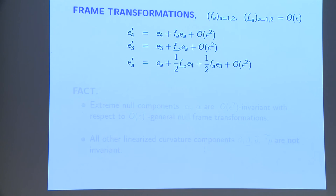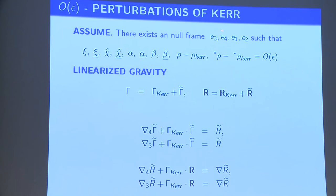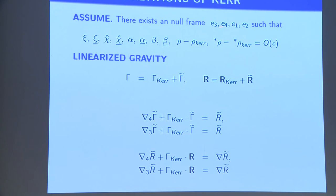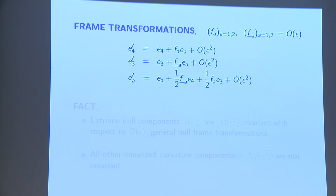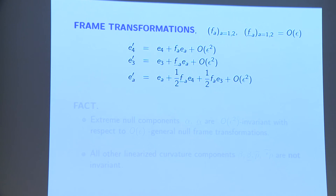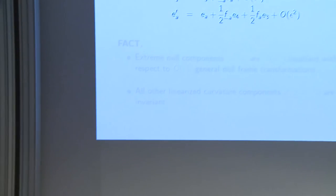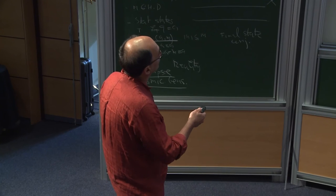One important observation: this frame is arbitrary up to order epsilon. If you change from one null frame to another by a frame transformation, everything that is O(epsilon squared) is fine — those are the terms we can handle in nonlinear equations. The quadratic terms are neglected; we look only at O(epsilon) terms. You just write down the general transformation preserving the null frame.